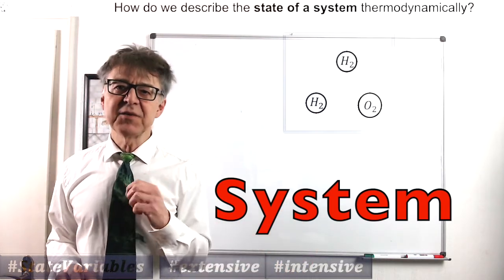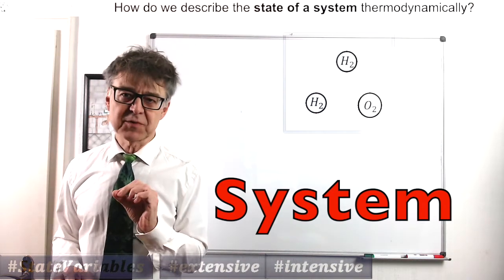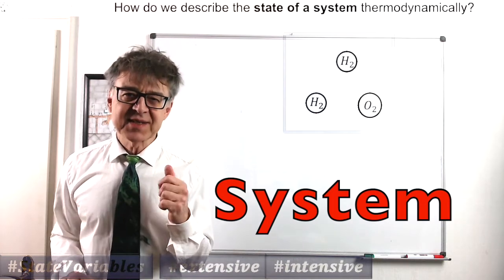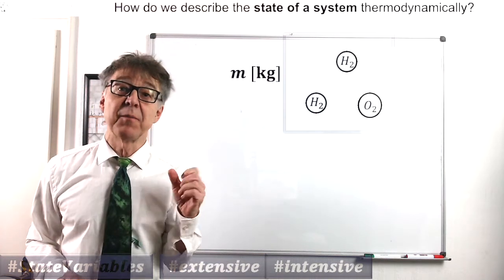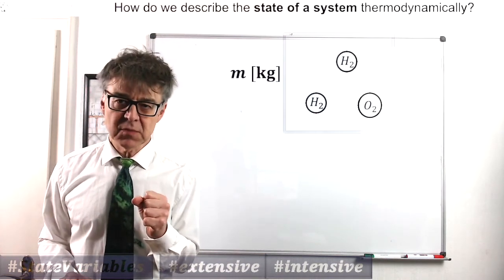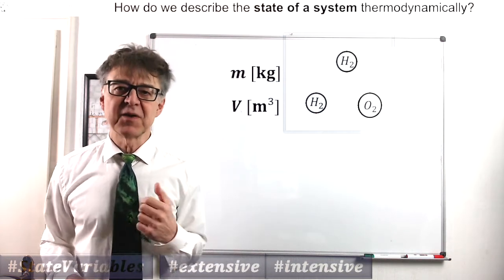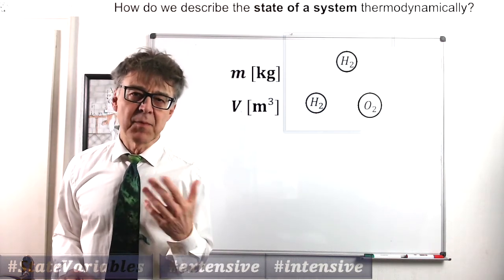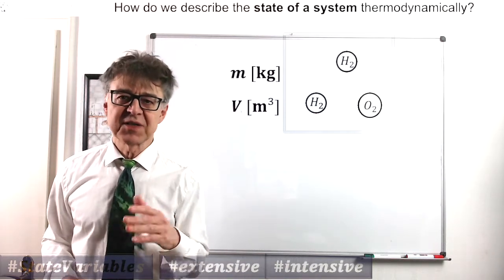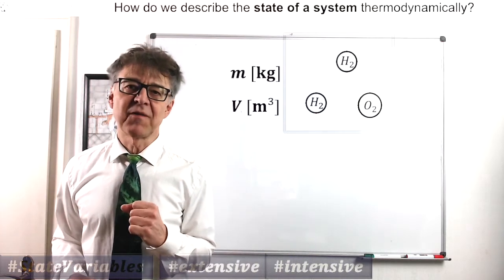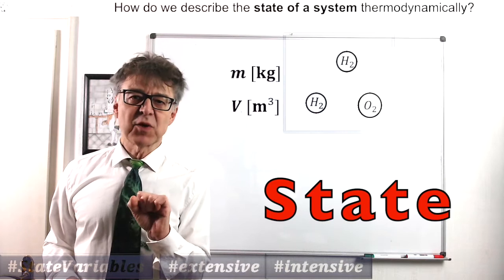Our system here now needs to be described and, as you may guess, completely described with numbers. Well, let's start with two numbers. We can, for example, specify the mass of the system, in this case 36 grams, and we may specify the volume, about 70 liters. Mass and volume are two of plenty of quantities, physical quantities, that describe the properties of the system, and we call these state variables or state functions.